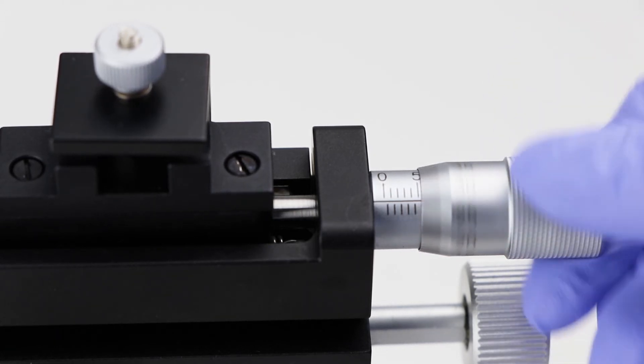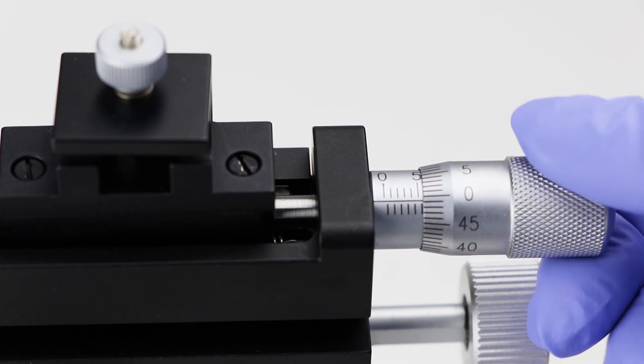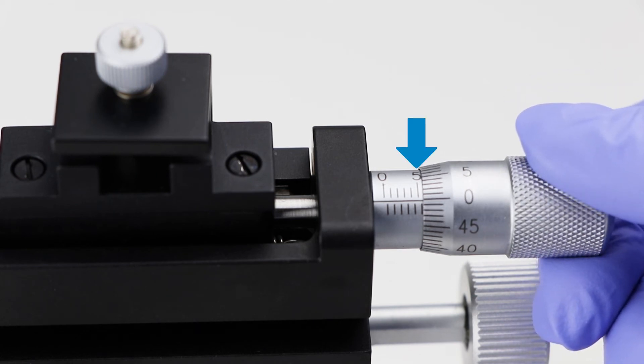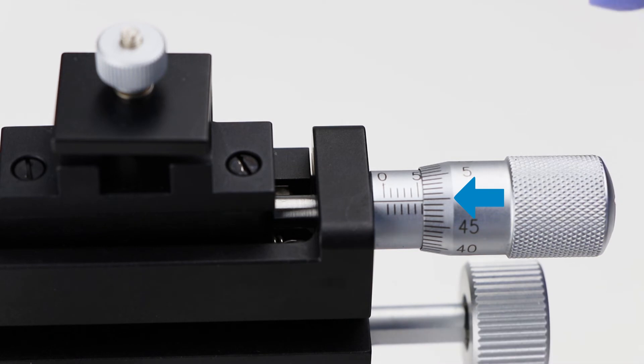Here's 5.50 millimeters. On the linear scale, the 5 is visible, but you can also see the half mark, 0.5, on the bottom side of the linear scale. Since the rotational scale is exactly zero, the final measurement is 5.50 millimeters.